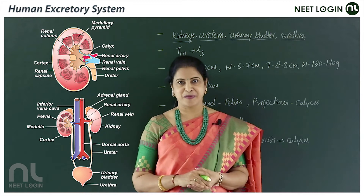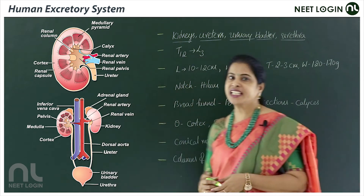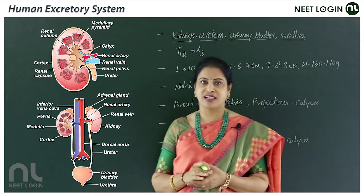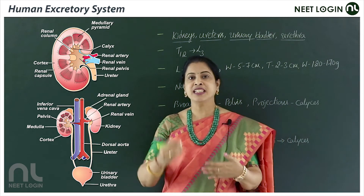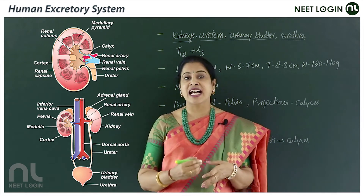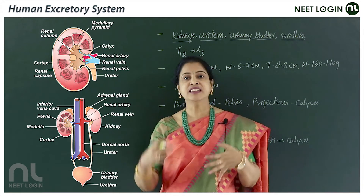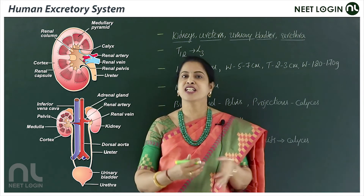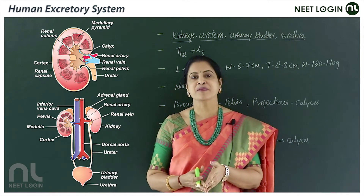The human excretory system includes a pair of kidneys, a pair of ureters, the urinary bladder, and the urethra. The branch of medicine which deals with the study of the anatomy, physiology, and pathology of the kidneys is called nephrology. A person having problems with his or her kidneys will consult a nephrologist, the specialist in nephrology.